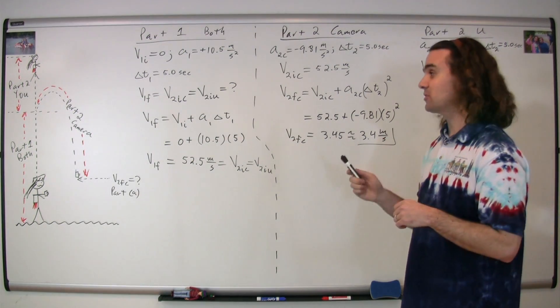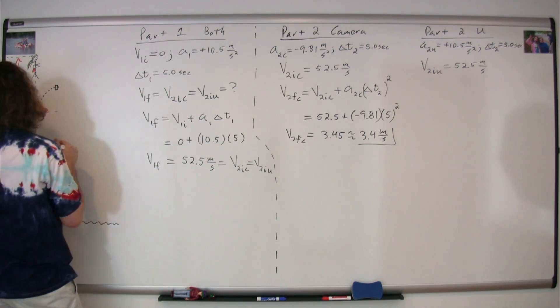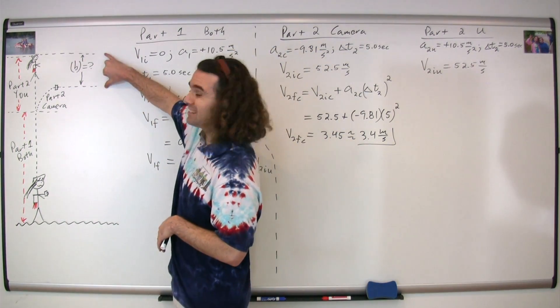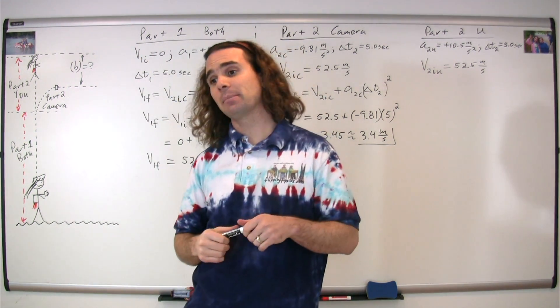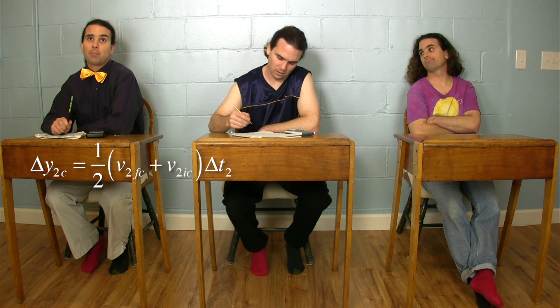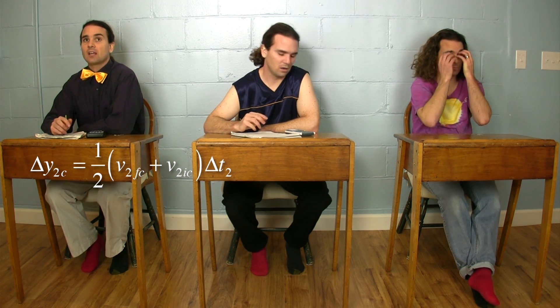We do need to adjust our picture to make sure it matches what we just figured out about the camera. Note that the given total mass of 75 kilograms is irrelevant — it's just extra information. For Part B, we are solving for the distance between you and the camera at the very end. We need to solve for the displacement for Part 2 for the camera using the UAM equation: displacement Part 2 camera equals one half times the quantity velocity Part 2 final for camera plus velocity Part 2 initial for camera, times the change in time for Part 2.